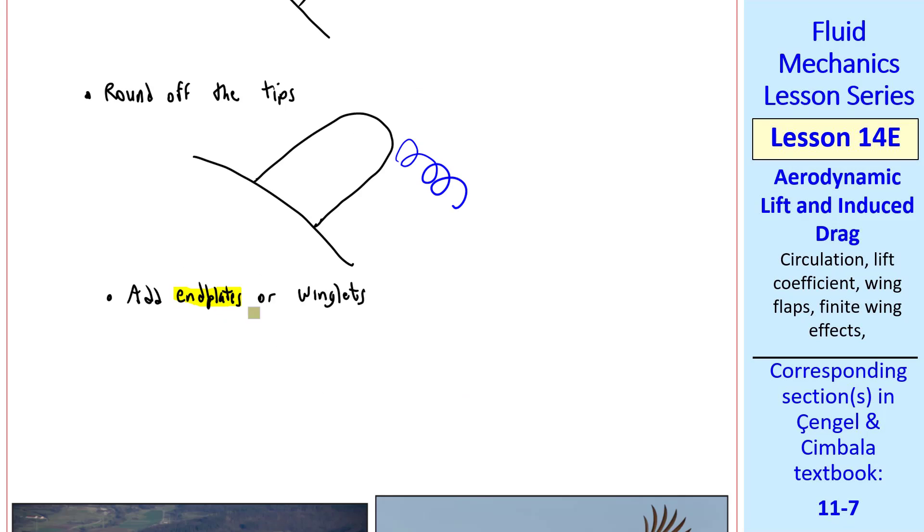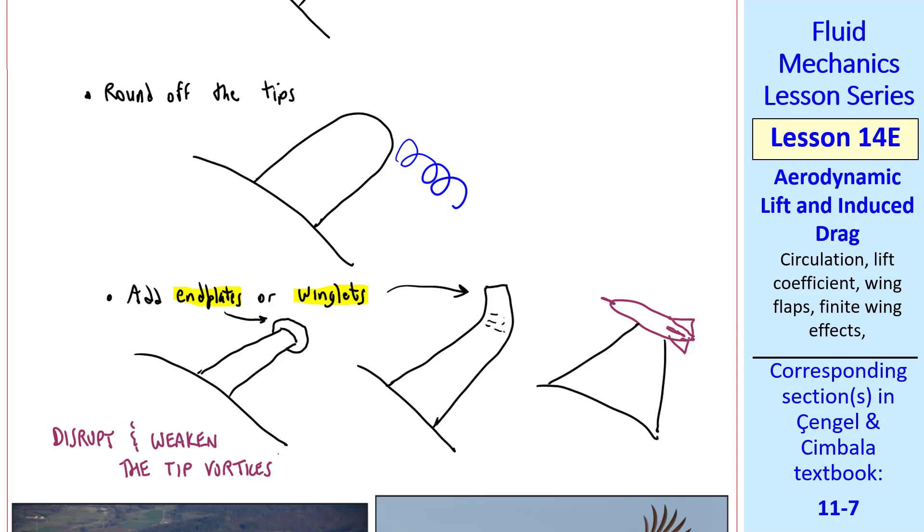You can also add end plates or winglets, where you add some kind of end plate on the end of the wing, or you bend the wing up at the end. This is called a winglet. This is called an end plate. Sometimes you see fighter aircraft with missiles mounted on the wing tip. They serve the same function as the end plate or the winglets. In all these cases, we disrupt and weaken the tip vortices, thereby reducing induced drag.